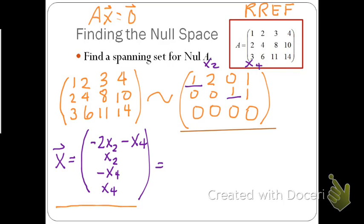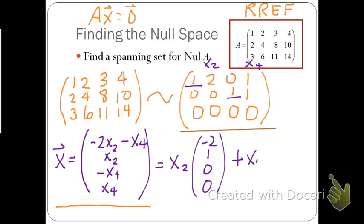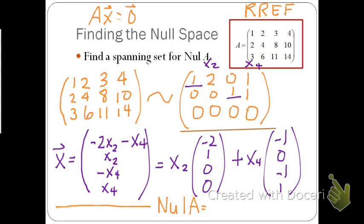We now get this solution to the linear system. Putting this into parametric vector form, we notice we'll have x2 times the vector (−2, 1, 0, 0) plus x4 times the vector (−1, 0, −1, 0).